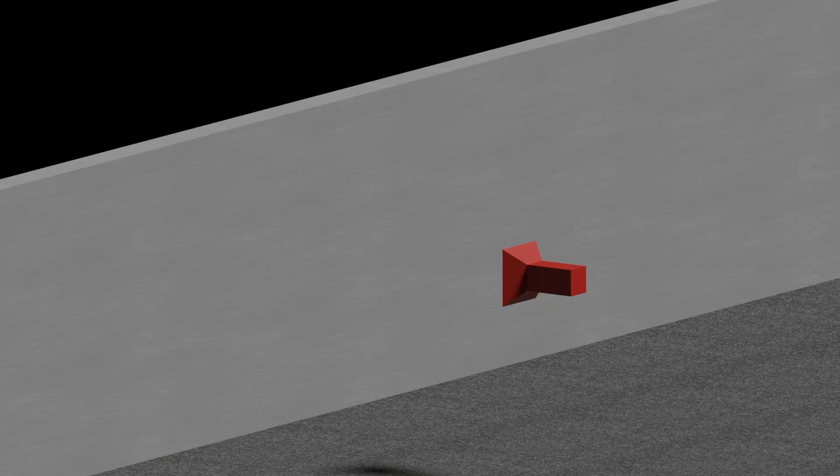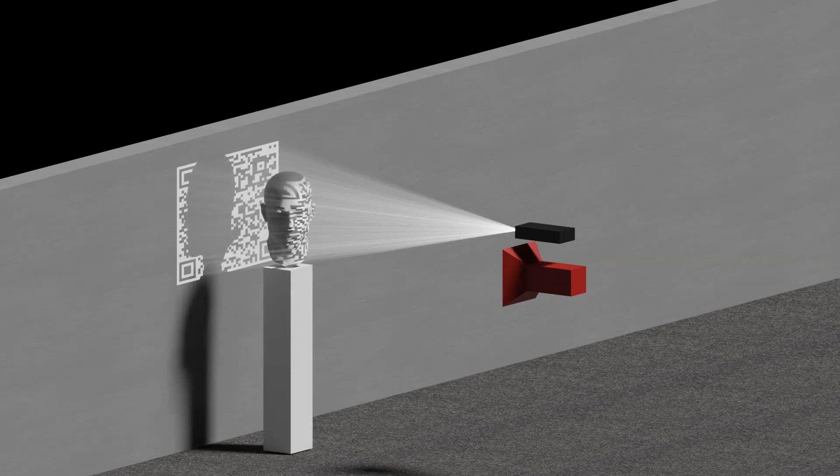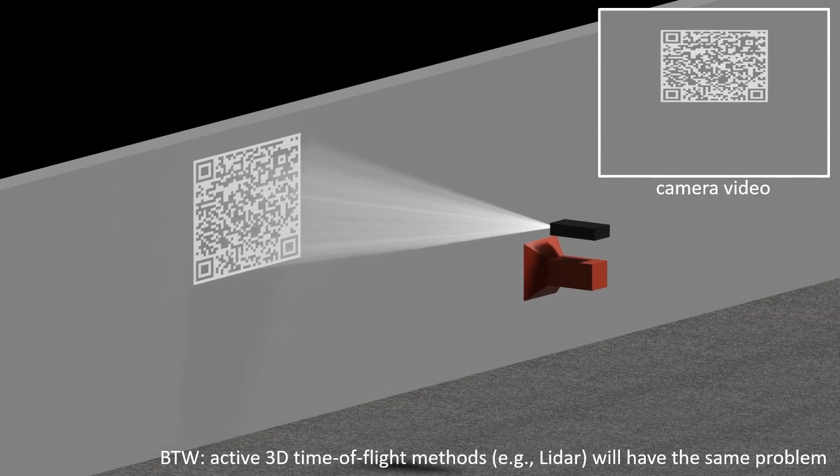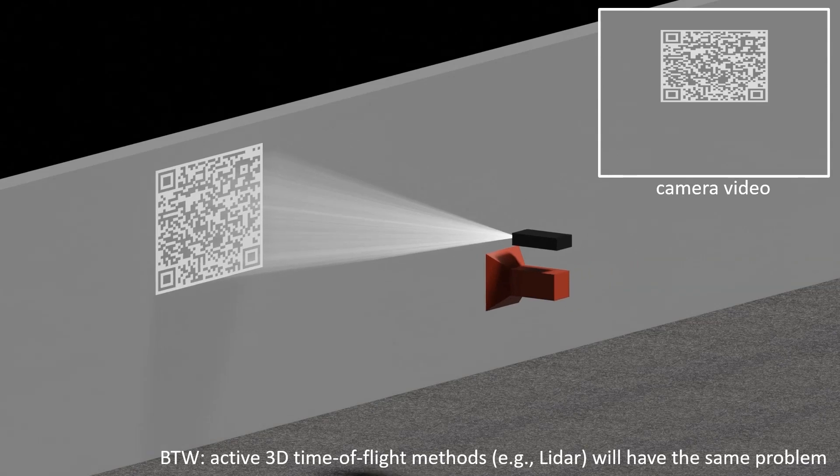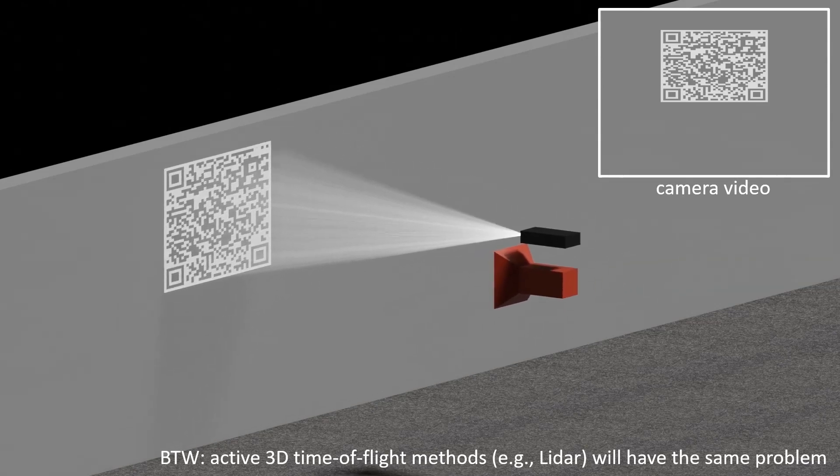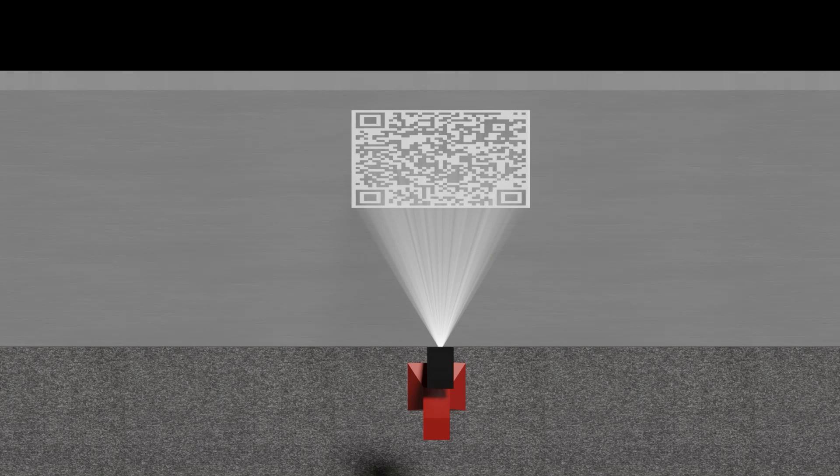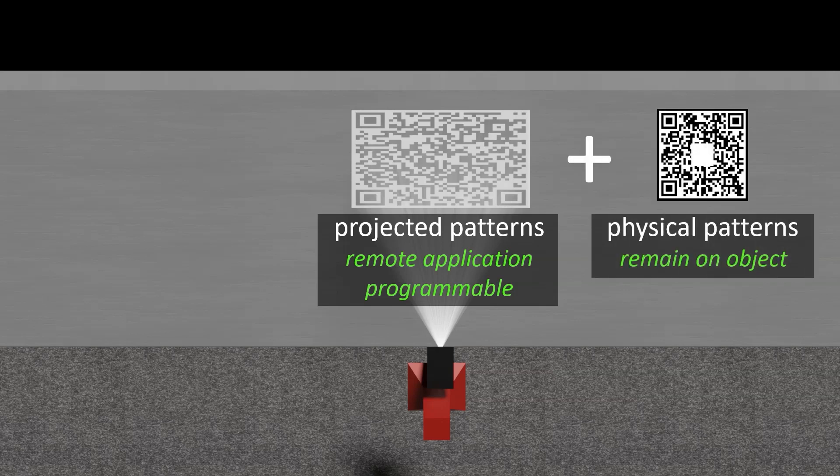A second way to add texture is to project it, which is great for reconstructing static objects but it doesn't help with dynamic tasks because the texture does not stick to the object like a physical pattern. But what if we could combine the advantages of both of these solutions? What if we could project a pattern remotely and then make it stick to the object surface like a physical pattern?